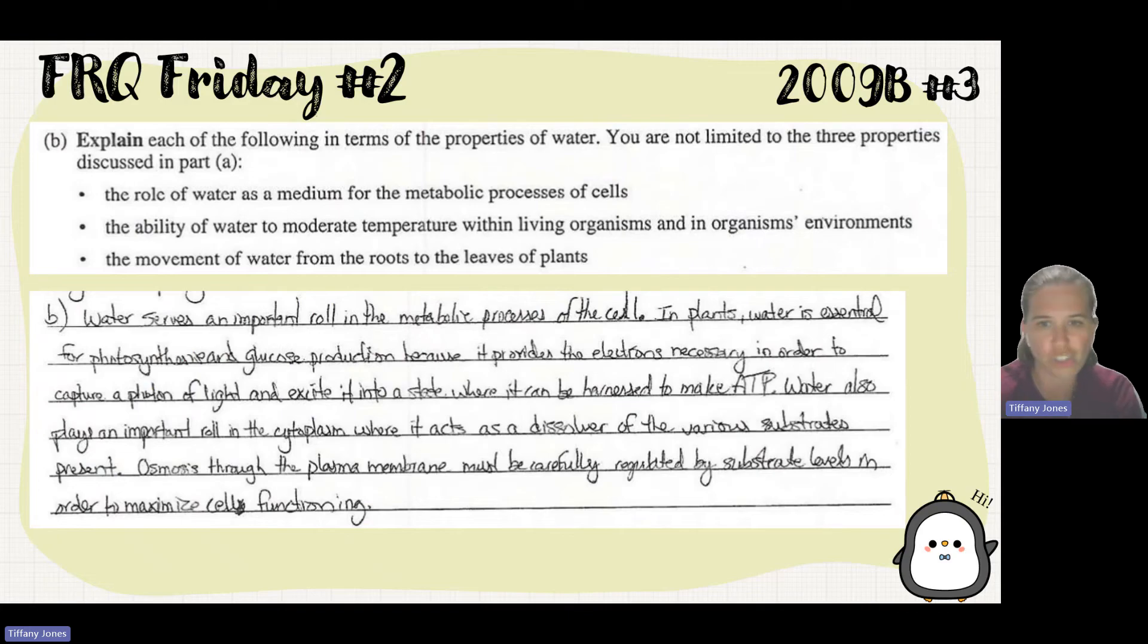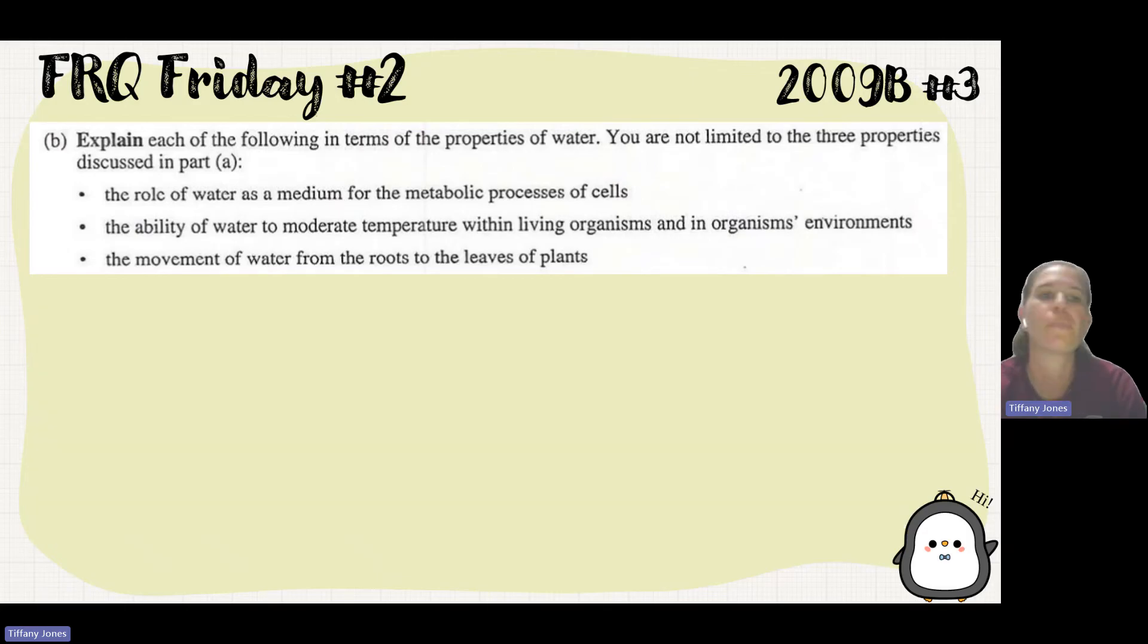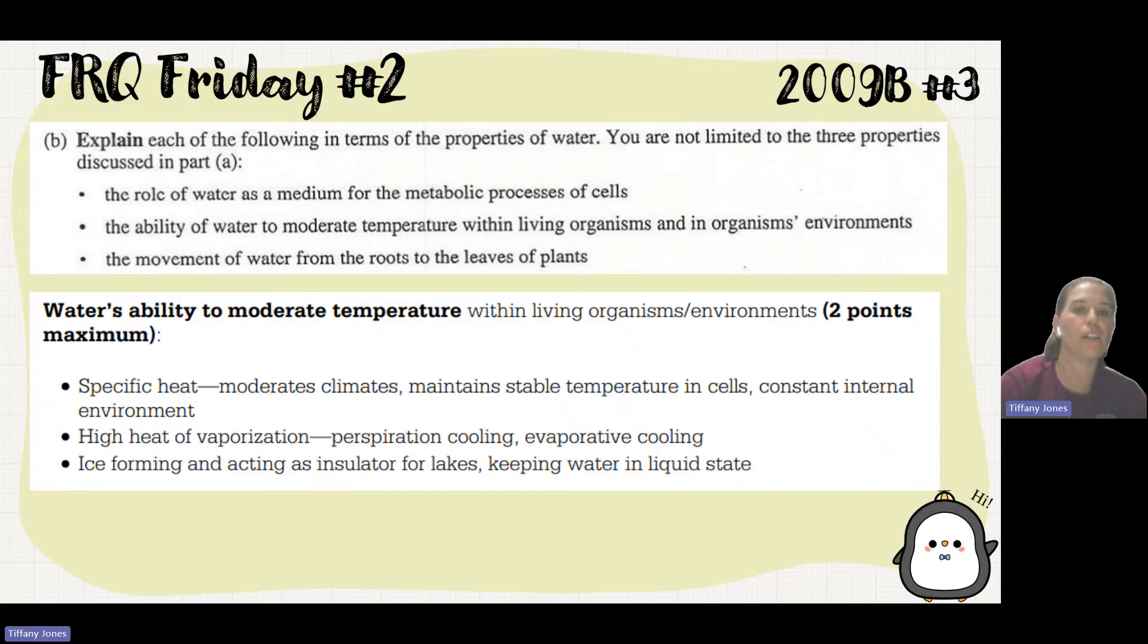You also talk about buffering and its role in formation of bicarbonate. When carbon dioxide goes into water it produces carbonic acid, and that bicarbonate ion buffers to maintain pH at the same level. The student went on a tangent about photosynthesis but didn't get credit because they didn't explain water potential thoroughly enough.